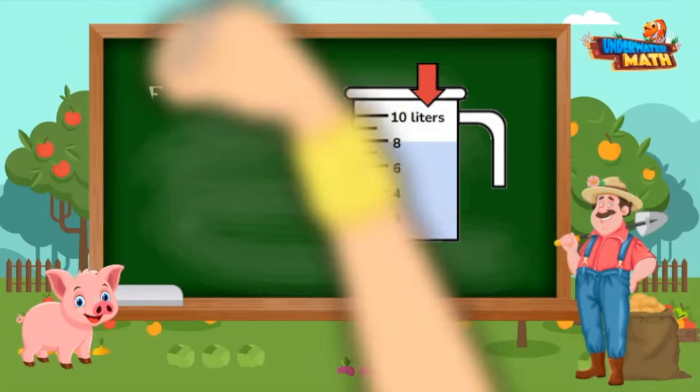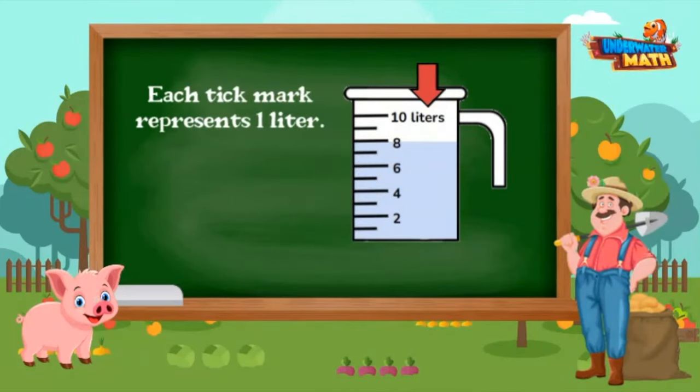There are 10 liters and 10 tick marks, so each tick mark represents one liter. To measure, you look at where the level of the liquid ends and lines up with a number on the side, like measuring with a ruler.